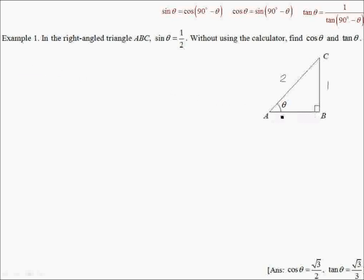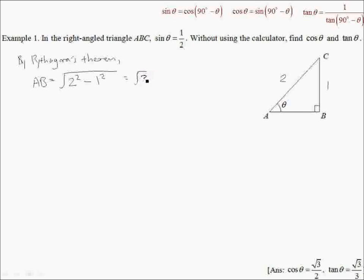The first step would be to find side AB. By Pythagoras' theorem, AB is equal to the square root of 2 squared minus 1 squared, which is just the root of 3. So over here is root 3. Without using the calculator, find cosθ and tanθ.